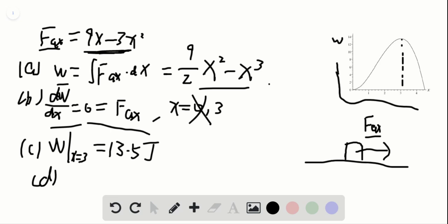And for part D, we want to know at which position the work is equal to 0. So we just need to find the zero point of this function. And we can just say that work equal to 0 and obtain that x equal to 0 or 4.5.